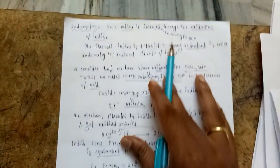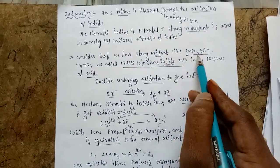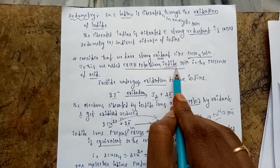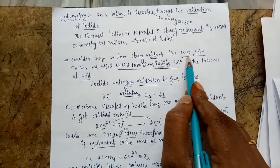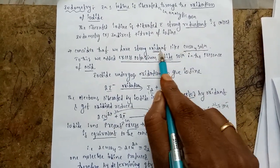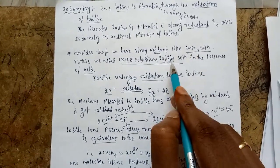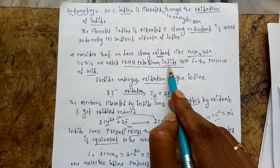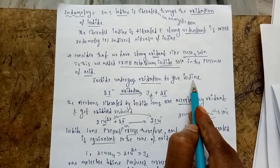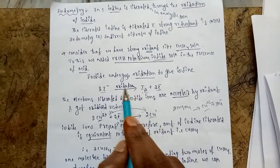Consider that we have a strong oxidant like copper sulfate solution in the conical flask. This copper sulfate acts as an oxidizing agent. To this, we add excess potassium iodide solution in the presence of acid. Copper sulfate oxidizes the iodide: iodide undergoes oxidation due to copper sulfate and is converted from iodide ion to iodine form. Electrons are liberated by iodide oxidation, and the oxidant — copper sulfate — gains those electrons and gets reduced.